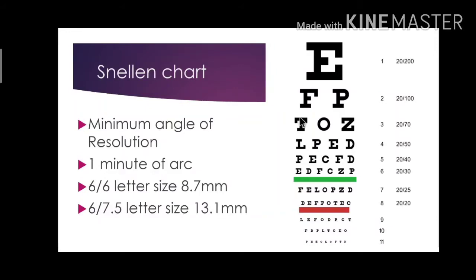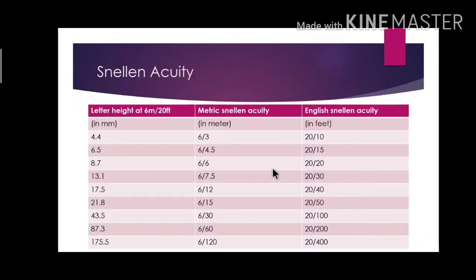To know more about minimum angle of resolution, watch my previous video. How do we record visual acuity? When a patient comes with a fever, the doctor checks the temperature and records it in degrees. Same way, visual acuity is recorded as a fraction — called the Snellen fraction. It is recorded as 6/6, 6/12, 6/30, and so on.